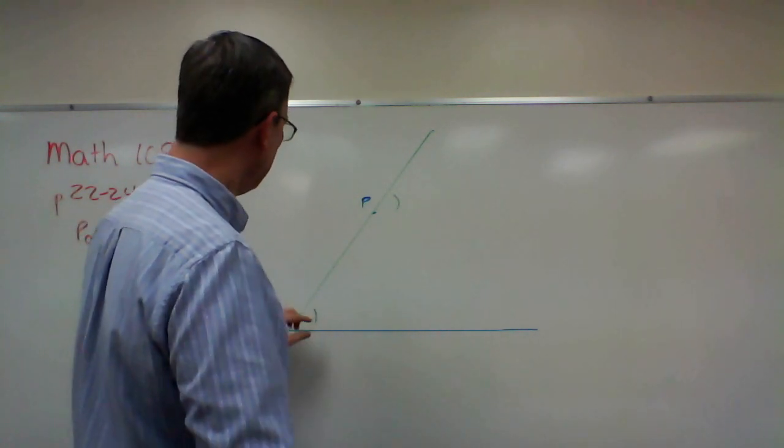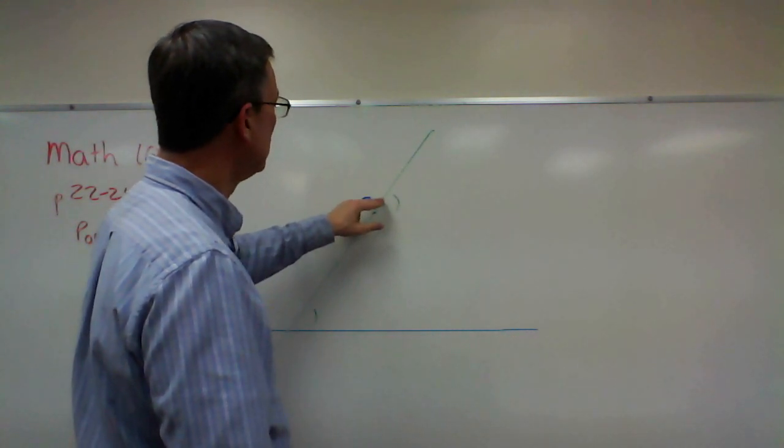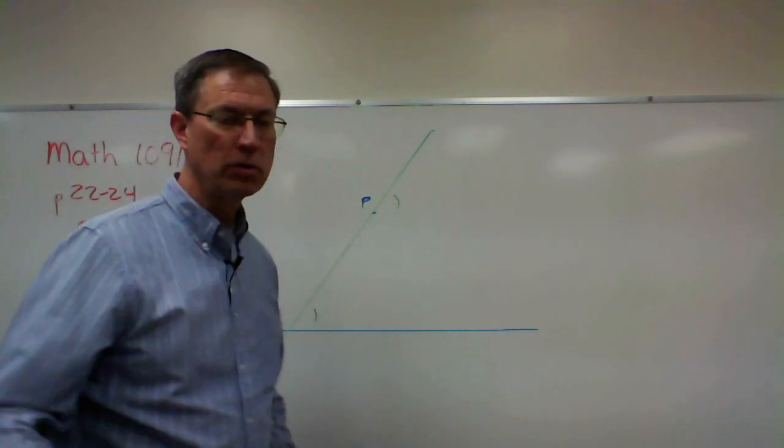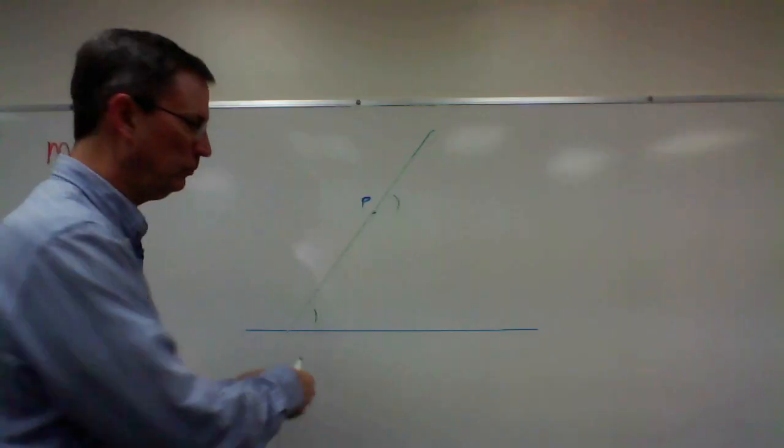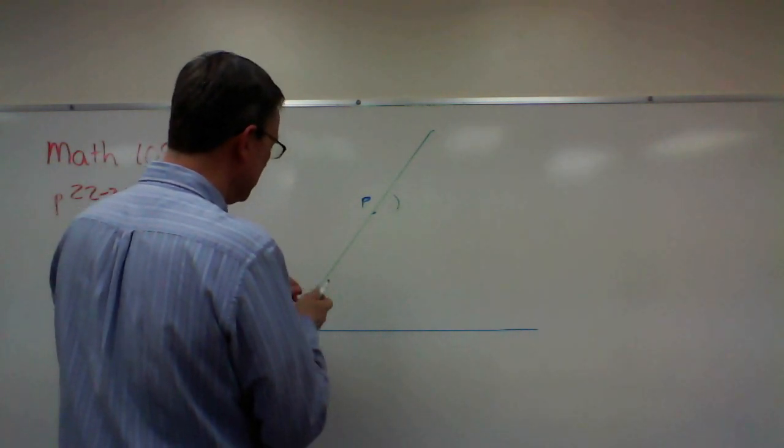So for these two angles to be congruent, I could actually copy this angle up to here. Let's go through the steps of doing that. So again, this represents a compass.